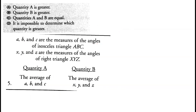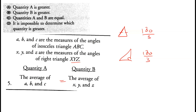A, B, and C are the angles of an isosceles triangle, and X, Y, Z are the angles of a right triangle. In both cases, all angles sum to 180 degrees. The average of A, B, C is 180 divided by 3, and the average of X, Y, Z is also 180 divided by 3. Both averages are equal, so option C is correct.